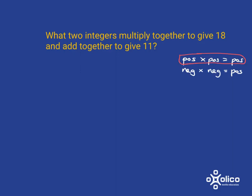So we're going to look at 18 and list all its factors — the things that multiply together to give 18. It could be 1 times 18, 2 times 9, or 3 times 6. Not 4, not 5, and then we're back to 6, so we have all of them. We just need to find which pair adds up to 11 — and it's 2 and 9. So our answer is 2 and 9.